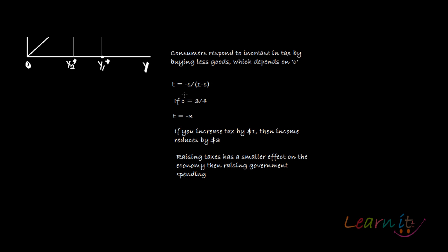We have already calculated that tax multiplier is given as minus C upon 1 minus C. So suppose marginal propensity to consume is 0.75.